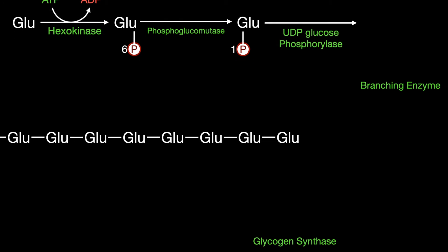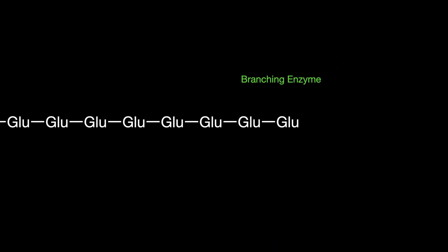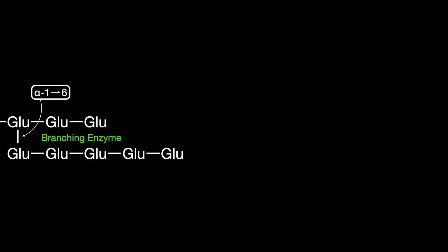After a long enough chain has been made, an enzyme called branching enzyme will cleave a portion of the chain, move it down, and make an alpha-1,6 branch. This process continues, growing the glycogen molecule as needed.